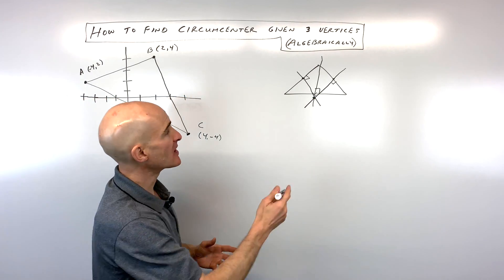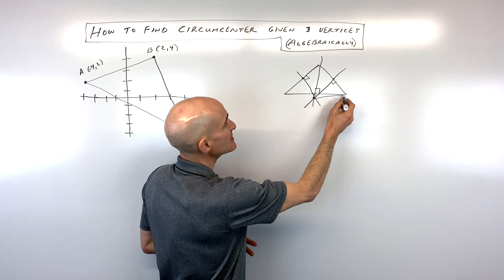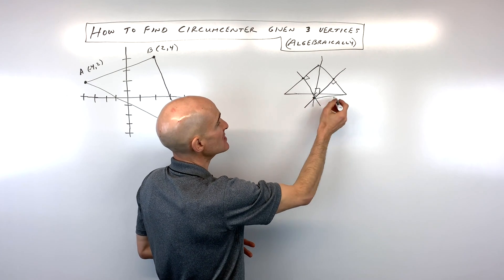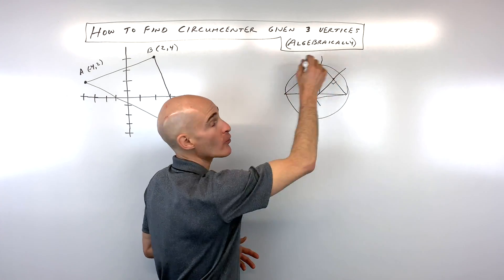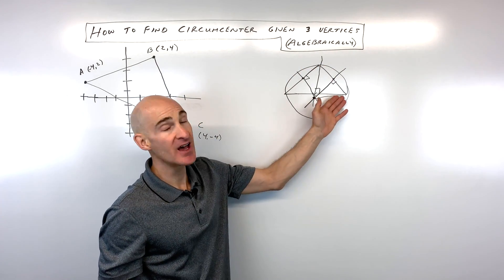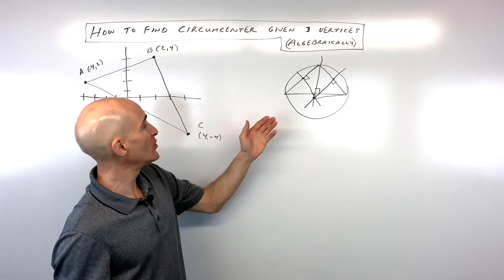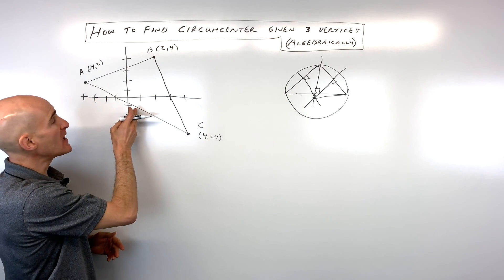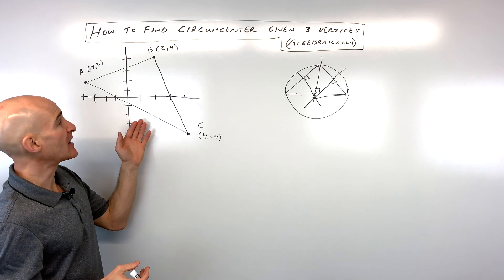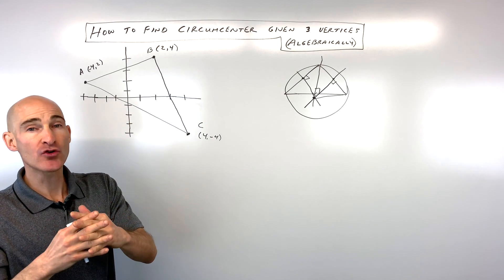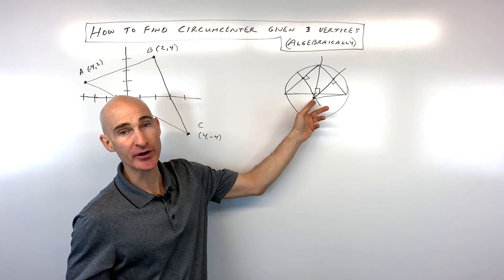The significance of the circumcenter is that you can think of this as the center of a circle. If you measure the distance to any one of the three vertices, it's going to be the same, meaning that you can circumscribe or draw a circle around the triangle such that the vertices of the triangle are on the circle. What we're going to be doing here is finding the equations of two of the perpendicular bisectors, finding where those two equations cross — that point is going to be the circumcenter, the center of the circle.